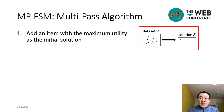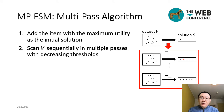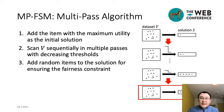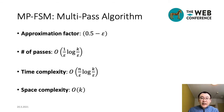Next, I will introduce how our multi-path algorithm works. In the first path, it will identify an element with the maximum utility among all items and add it to the initial solution. Then, in subsequent paths, it scans the dataset sequentially with decreasing thresholds. In each path, an element is added to the solution if its marginal utility gain reaches the current threshold. Finally, in the last path, it adds random items to the solution for ensuring the fairness constraint. Here are some theoretical results of our multi-path algorithm.